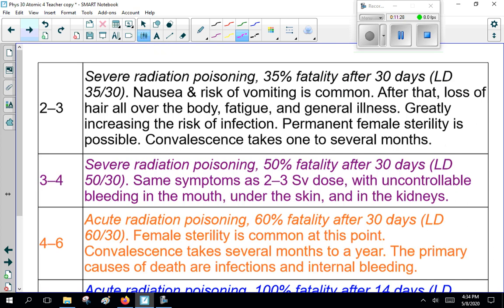Now, 2 to 3 sieverts is severe radiation poisoning. That's 35% fatality after 30 days. Lethal dose is 35% after 30 days, nausea and risk of vomiting, lose all your hair, fatigue, general illness. Now, once again, here, the problem is it suppresses your immune system, so something else comes along and kills you. Now, a real problem with this, permanent female sterility. Here, the ladies, their ovum are destroyed. They don't make new ones.